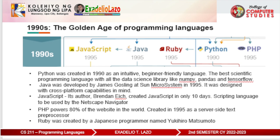The 1990s: the golden age of programming languages. We saw a new batch of programming languages being created, and the languages from this era still dominate the rankings of most popular programming languages today. The 'big three' — Java, JavaScript, and Python — all came from this decade. Python was created in 1990 as an intuitive, beginner-friendly language, famed as 'runnable pseudocode' for its superb readability.